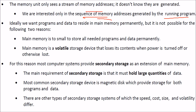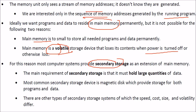We want everything stored in main memory, but that isn't possible because main memory is small and volatile — when power is off, data is lost. Therefore, secondary storage is needed as an extension of main memory to hold large quantities of data in a non-volatile manner. There are magnetic disks, SSDs, and solid-state devices in current laptops. Storage devices are used based on size, cost, and volatility.